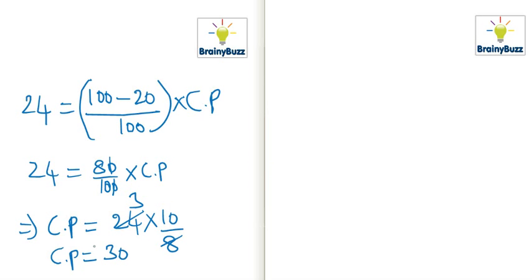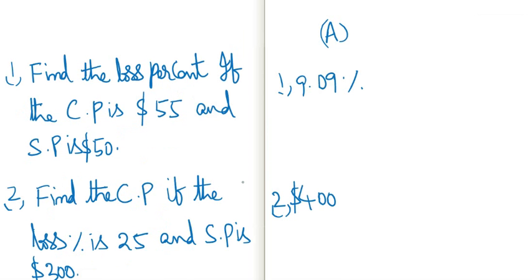Exercise: Find the loss percent if cost price is $55 and selling price is $50. Answer: 9.09%. Second: find the cost price if the loss percent is 25% and selling price is $300. Answer: $400.